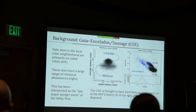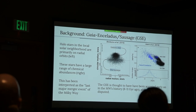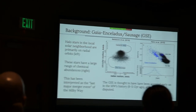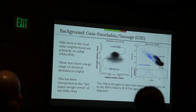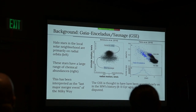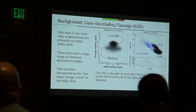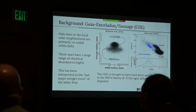There's this smear from left to right of stars at different velocities. That's what they call the sausage, because it looks like a sausage on this plot. This has been interpreted as this last major merger event of the Milky Way.